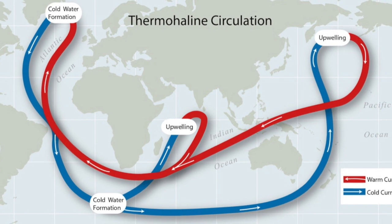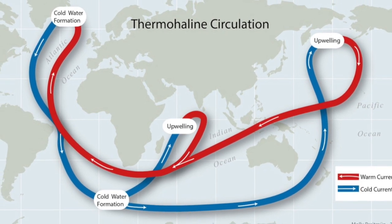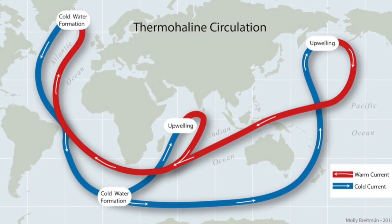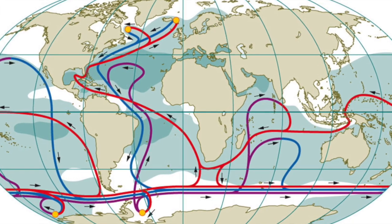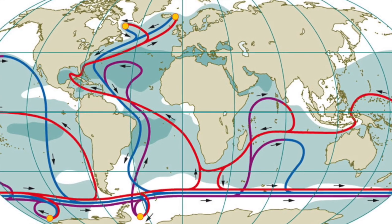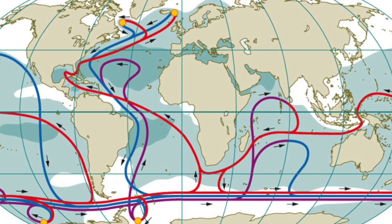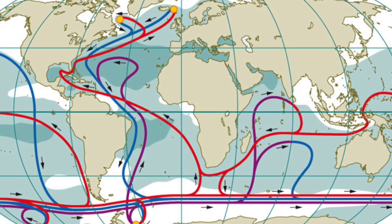The cycle, thermohaline circulation, continues and causes deep ocean currents that circulate the sea for up to one thousand years.